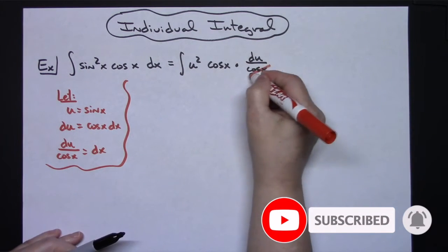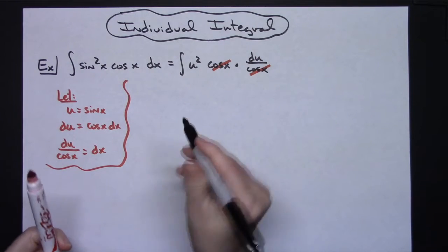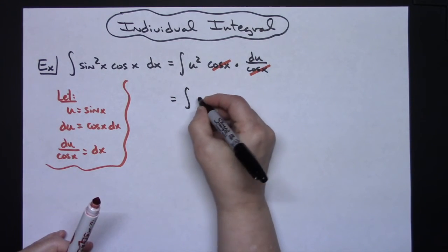What that allows me to do then is cross out those cosine x's, and that'll leave me with an integral in terms of u: the integral of u squared du.